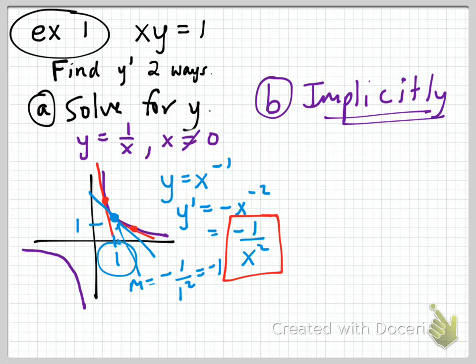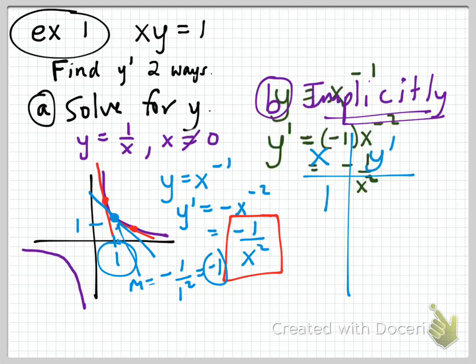When x equals 1, y prime equals negative 1. Using the implicit result, when x is 1, we know that y is also 1 on the same graph.